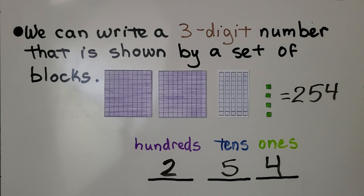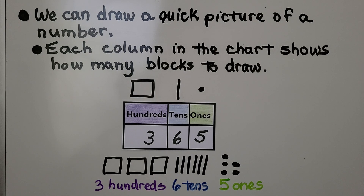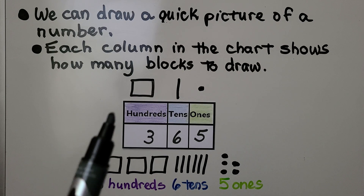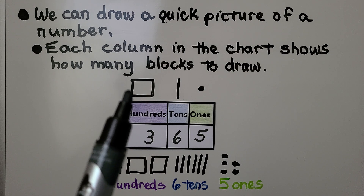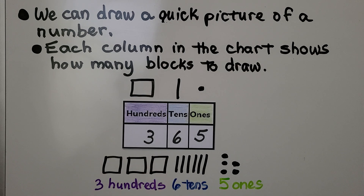We can draw a quick picture of a number. Each column in the chart shows how many blocks to draw. We use squares for hundreds, lines for tens, and dots for ones.